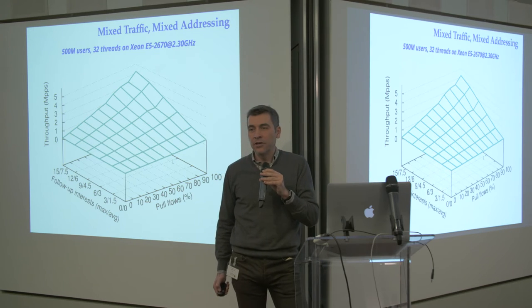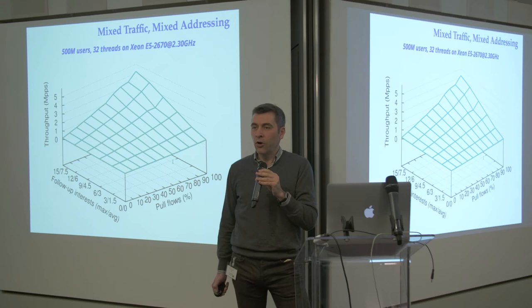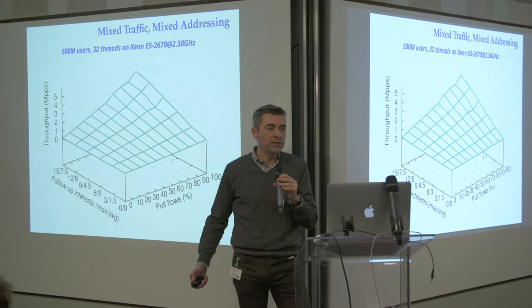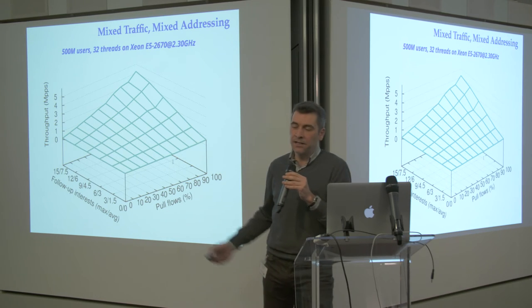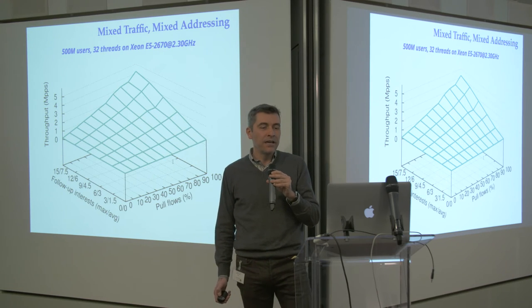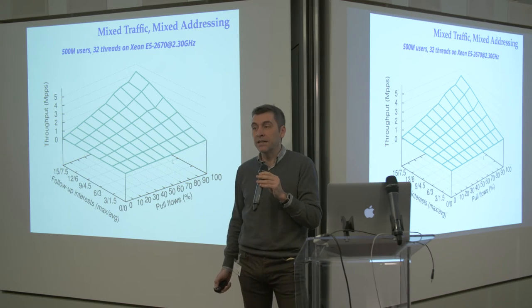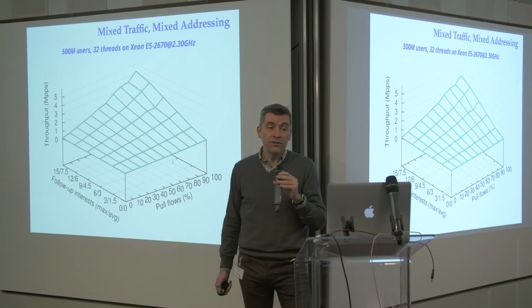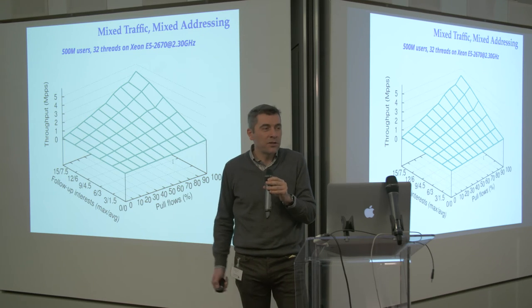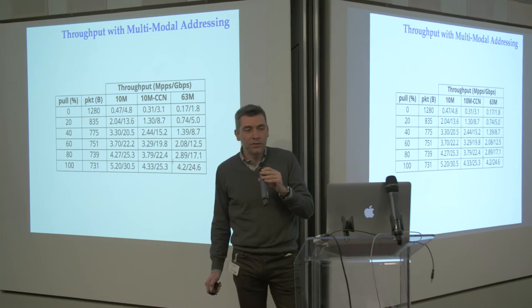On a commodity CPU, for FIBs representing up to 500 million users, the throughput for pure descriptor matching is in the hundreds of thousands of packets per second. However, in practice most flows have most packets forwarded by locator — descriptors play a role only at connection initiation or for infrequent notifications, while bulk data transfer goes by locator. When you mix descriptor and locator traffic, with relatively large objects, the effective average throughput rises to millions of packets per second on this single cheap CPU.